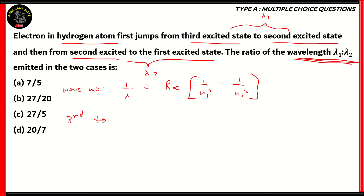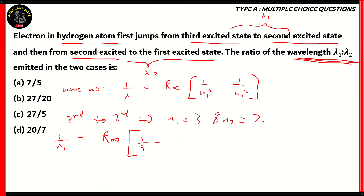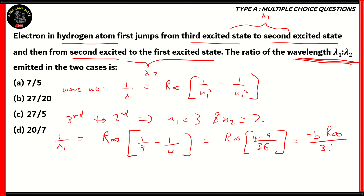The wave number is one over lambda, equal to the Rydberg constant times (one over n1-squared minus one over n2-squared). For the third excited to second excited state, n1 equals 3 and n2 equals 2. So one over lambda-one equals R times (one-ninth minus one-fourth). The LCM is 36, giving (4 minus 9) over 36, which is negative five over 36. Therefore lambda-one equals negative 36 over 5R.